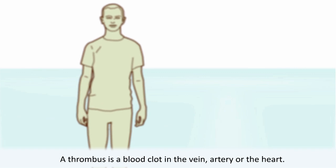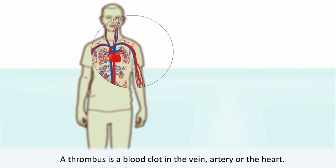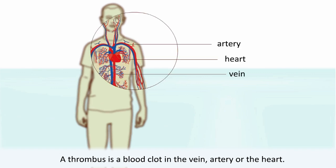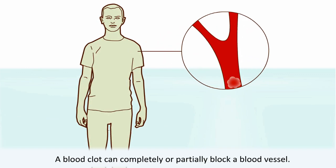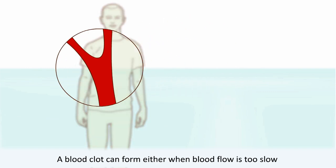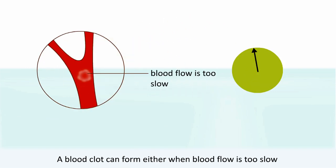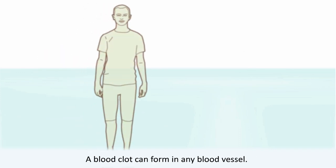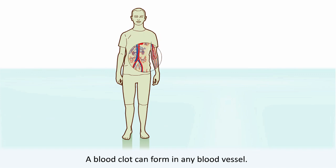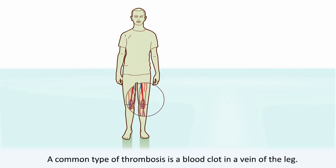A thrombus is a blood clot in a vein, artery, or heart. A blood clot can completely or partially block a blood vessel. A blood clot can form either when blood flow is too slow or when clotting occurs when it is not needed. A blood clot can form in any blood vessel.